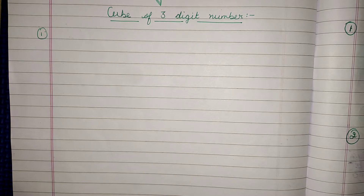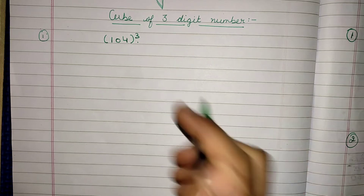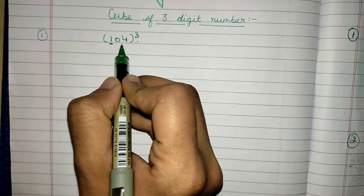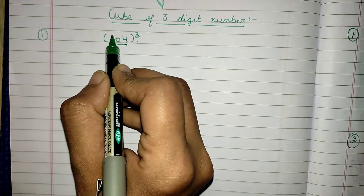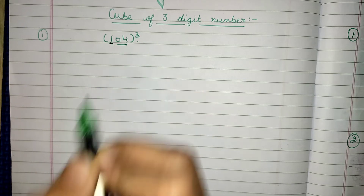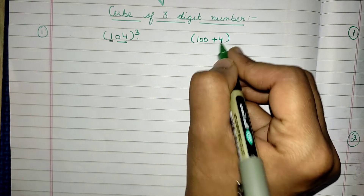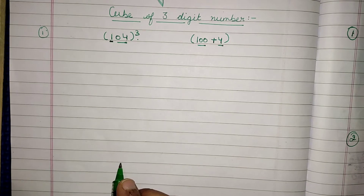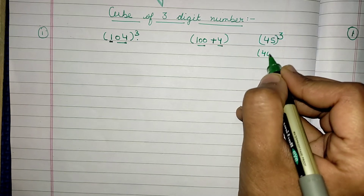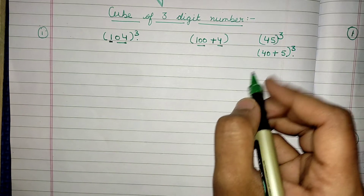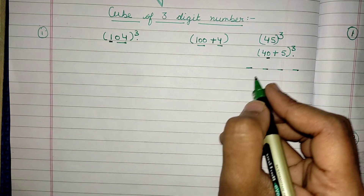In the previous video when finding the cube of a two-digit number, we were taking the first digit and the second digit. Now we will divide our number into two parts. For 104, I can write it as 100 plus 4. Earlier, for a number like 45 cube, I wrote it as 40 plus 5 cube — there was one digit so I divided the answer into four parts.